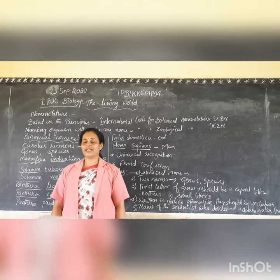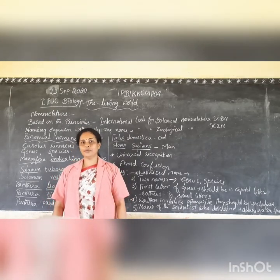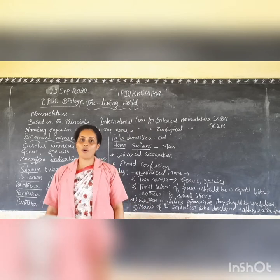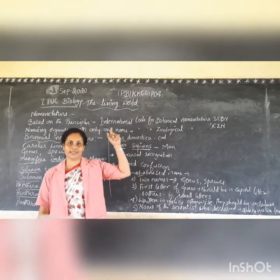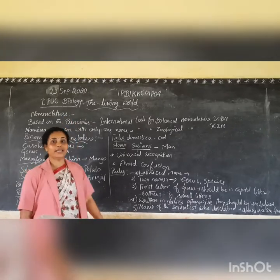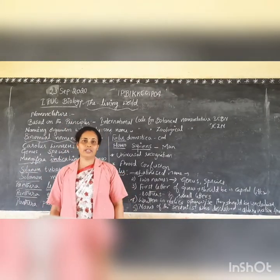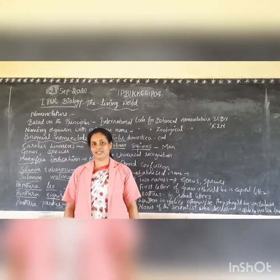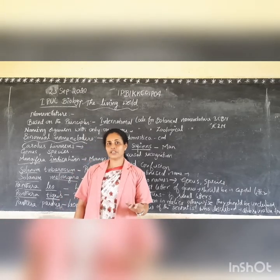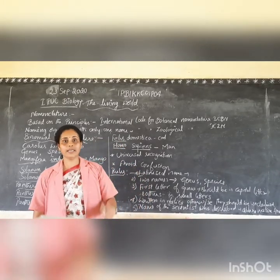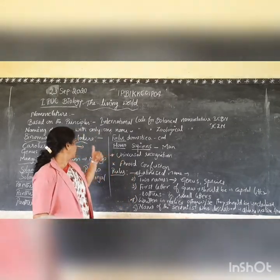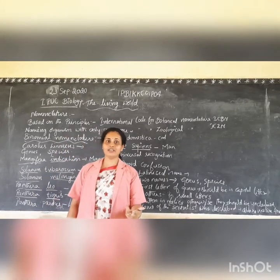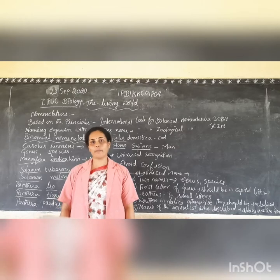In order to standardize the name, it would be better to call one organism with one particular name which is known by all — that is nothing but nomenclature. Nomenclature is the naming of organisms. It is not a local name or common name; it is a scientific method of naming organisms, mainly given by Carolus Linnaeus. Hence he is called the father of classification or father of binomial nomenclature.